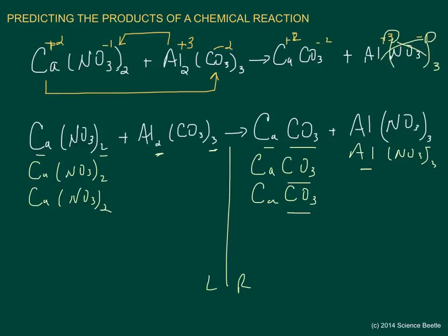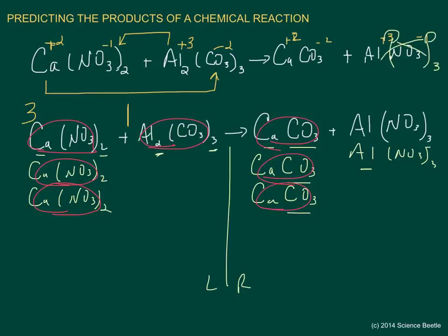Now I count the actual compound groups to assign coefficients. Calcium nitrate: one, two, three groups — coefficient of three. Aluminum carbonate: one group — coefficient of one. On the right side, calcium carbonate: one, two, three — coefficient of three. Aluminum nitrate: two groups — coefficient of two. And that's the second part of predicting the products of a chemical reaction. Hopefully you found this helpful — go ahead and subscribe and we'll see you next time.